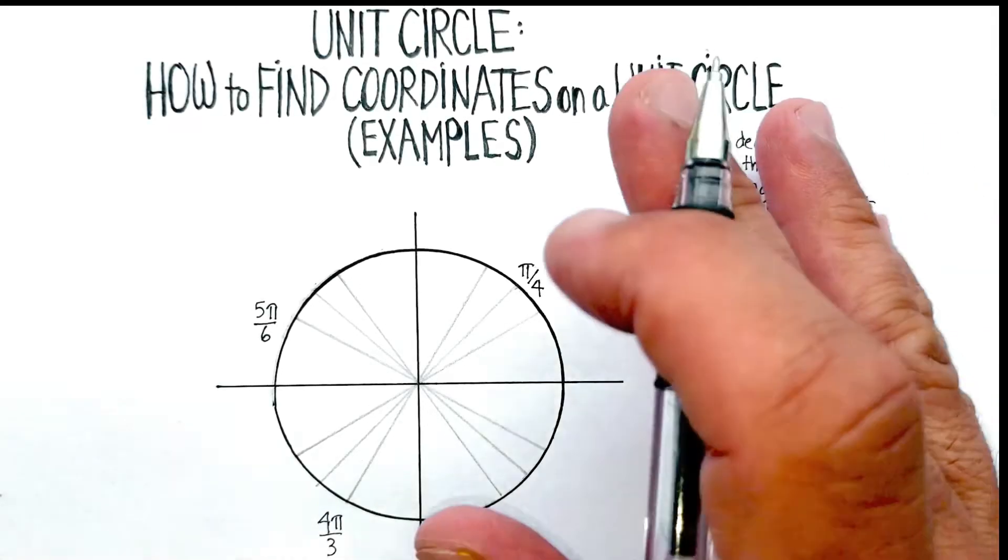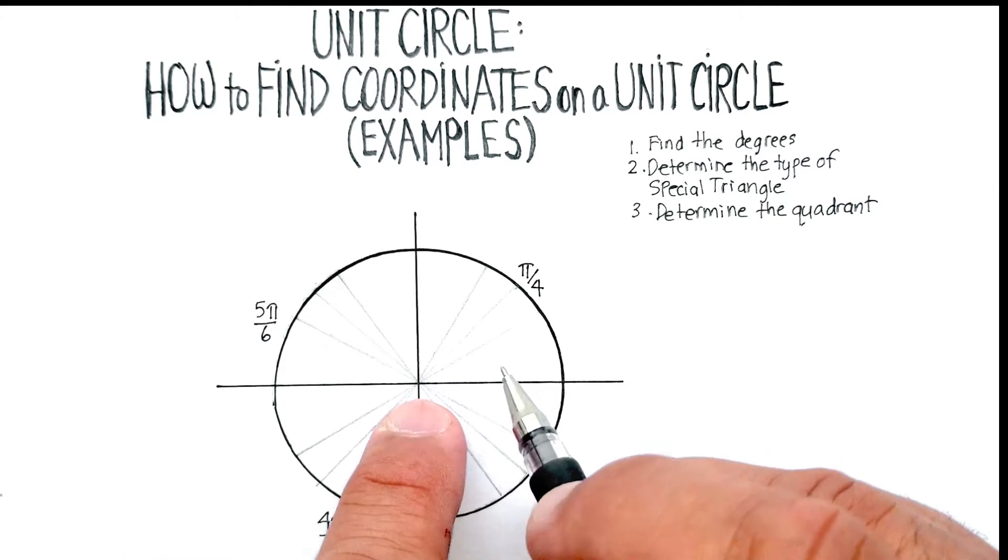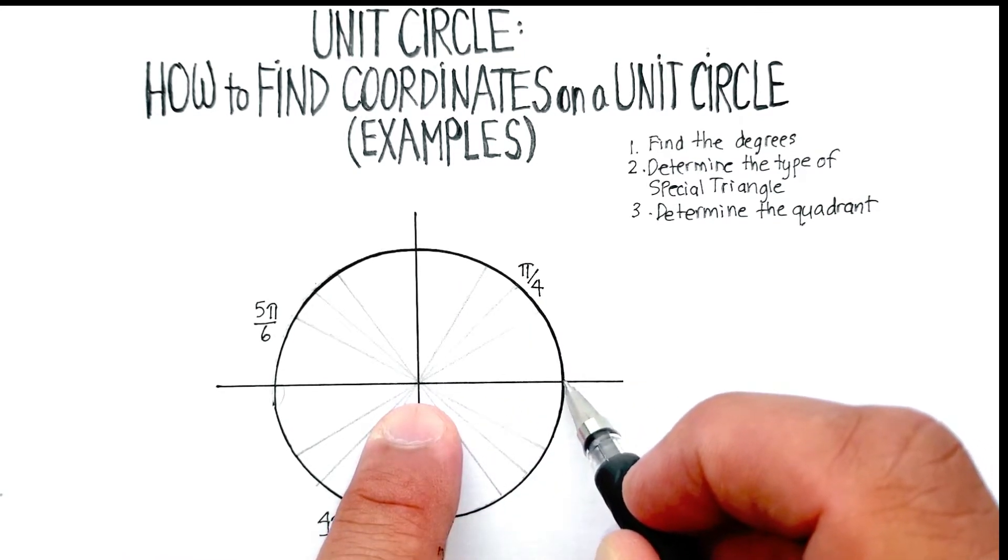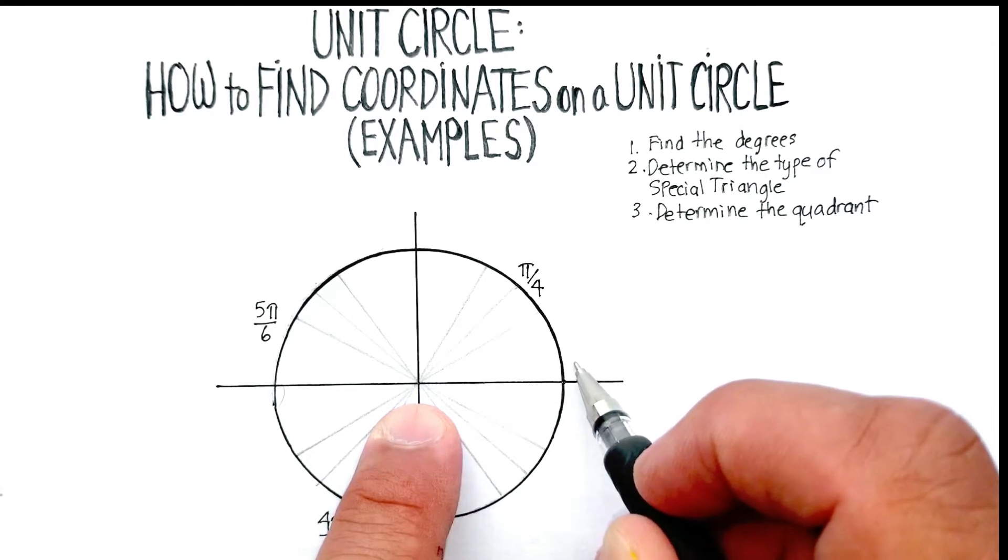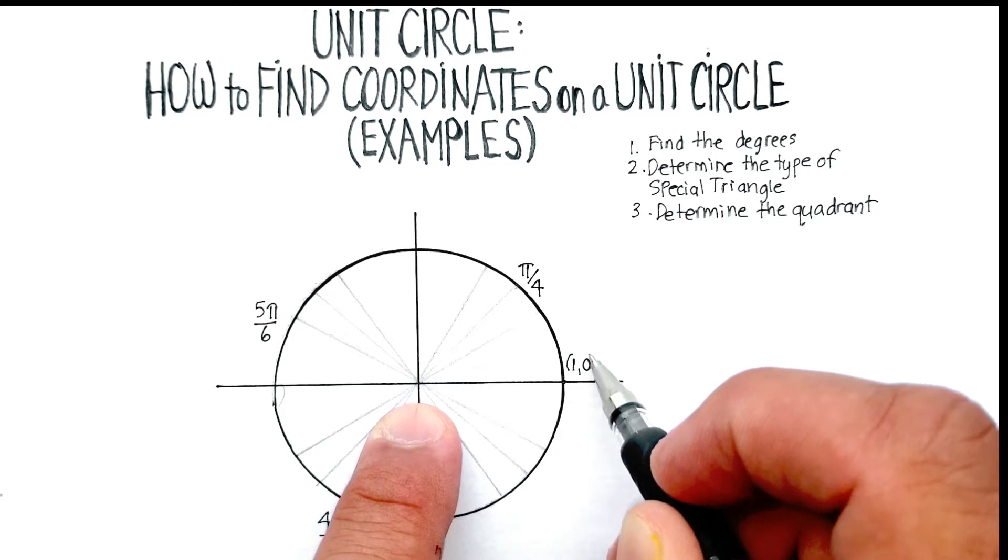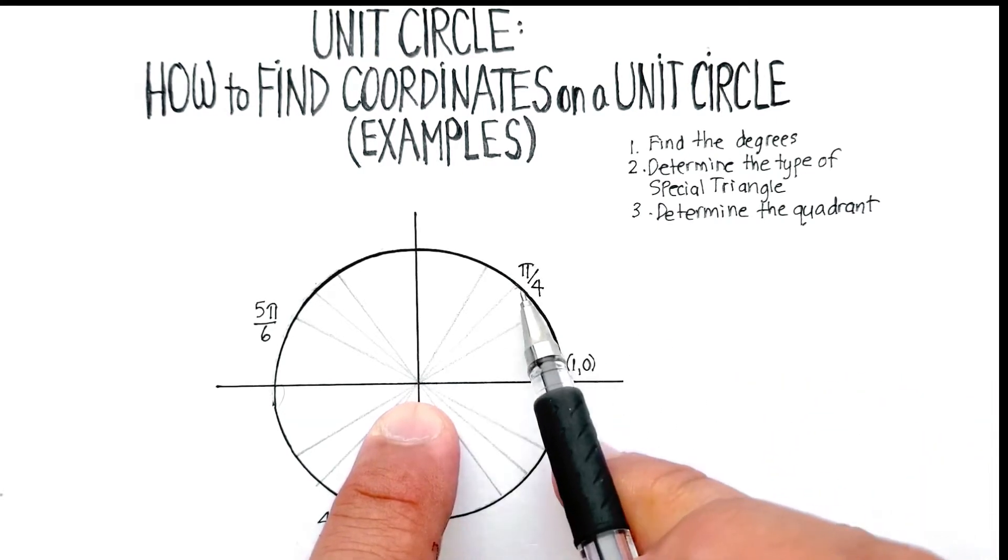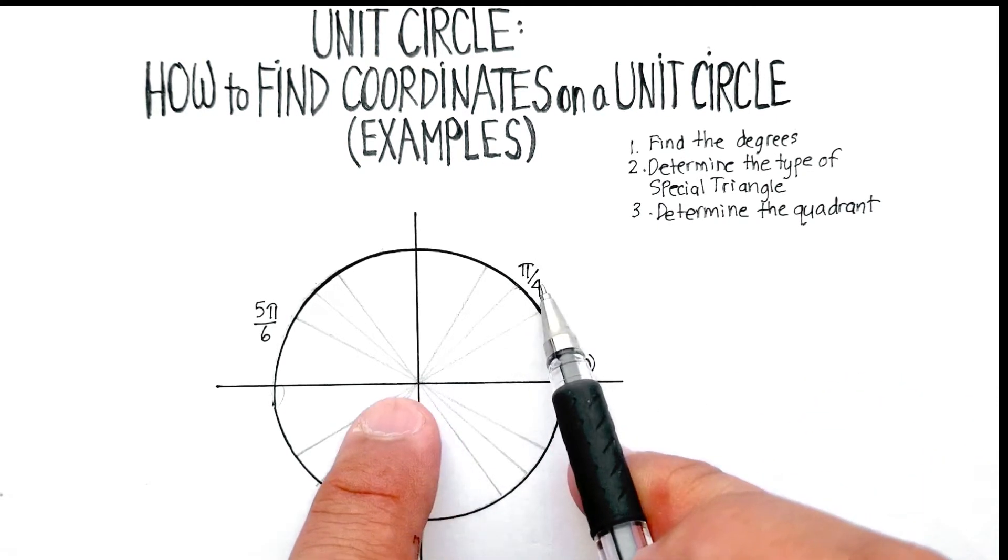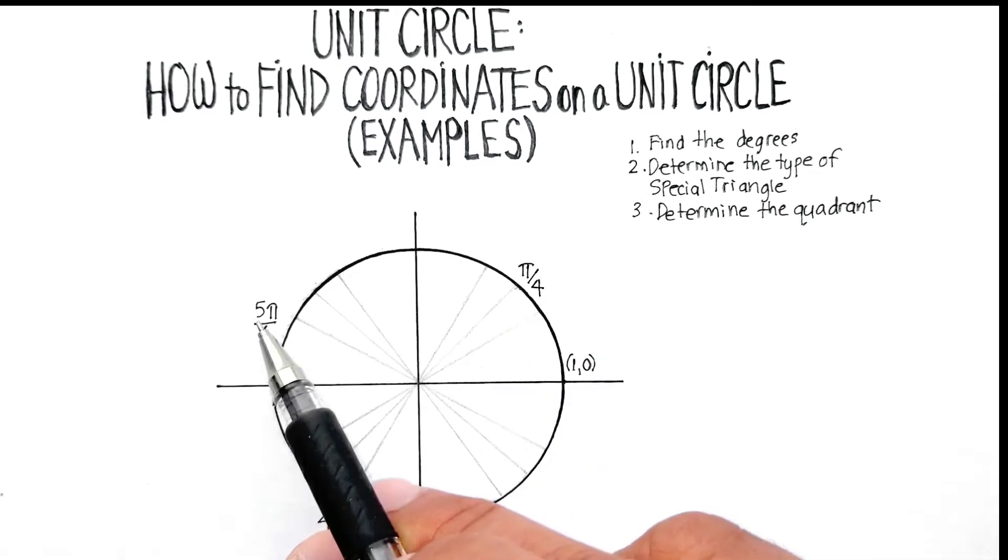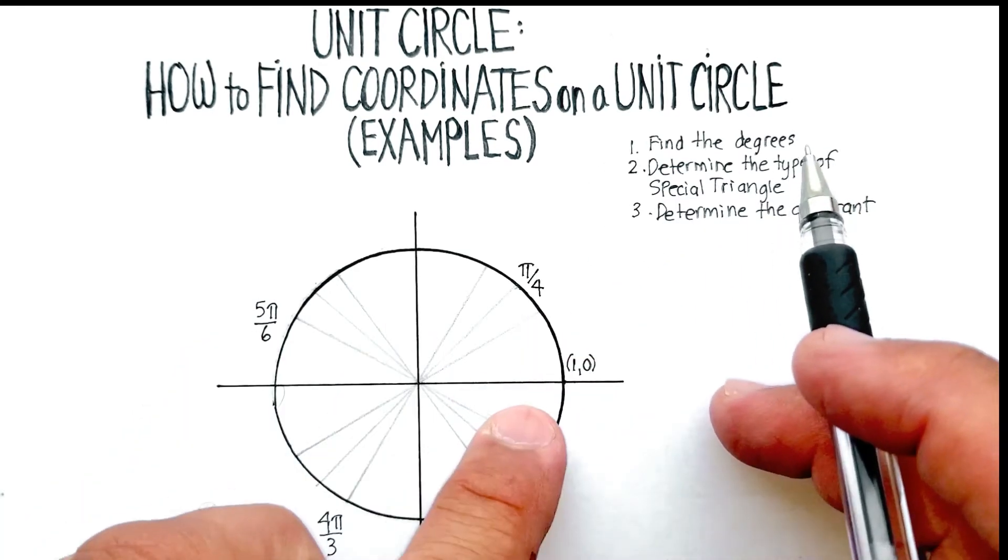Just as a reference, remember that a coordinate on a unit circle always has a radius of 1. So the coordinate right here, probably one of the easiest ones, would be at 1, 0. But what about where the radian is like π over 4 or 4 thirds π or 5π over 6? How do you find the coordinates there?